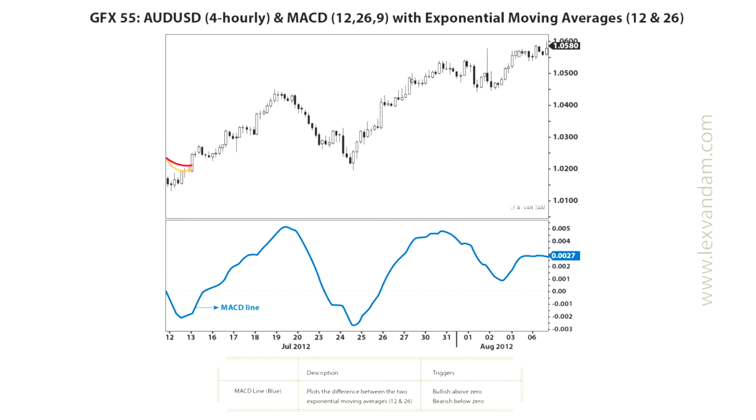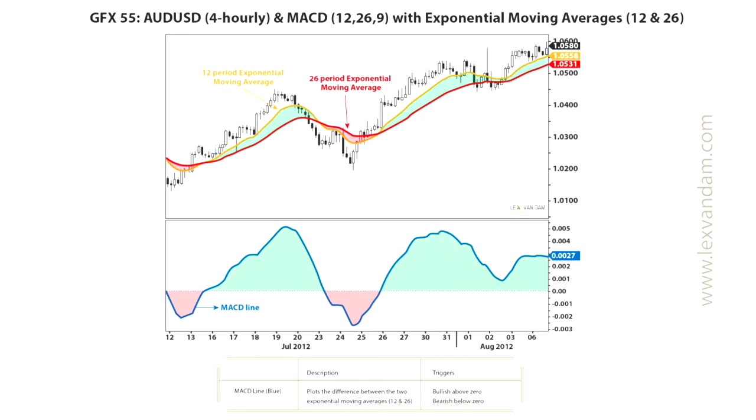The next trend-following setup is based on the moving average convergence-divergence indicator. We discussed this earlier when we looked at lagging indicators. Let's remind ourselves how it works based on a four-hourly chart of the Australian dollar. The typical MACD is based on 12 and 26-period exponential moving averages. You can see these two plotted on top of the price chart in yellow and red respectively.